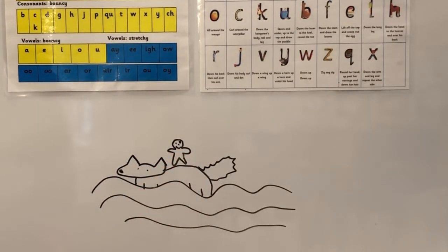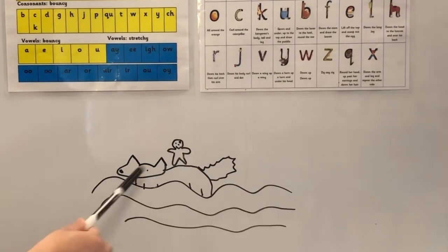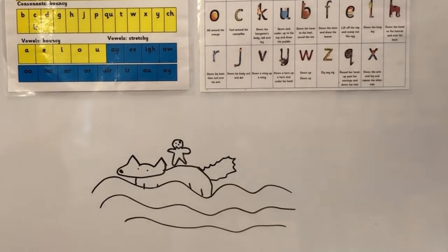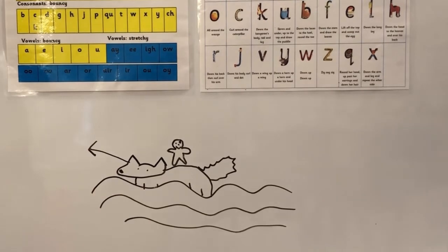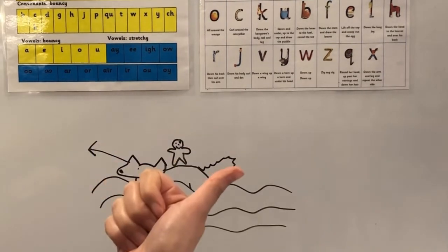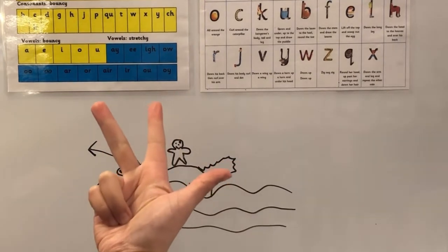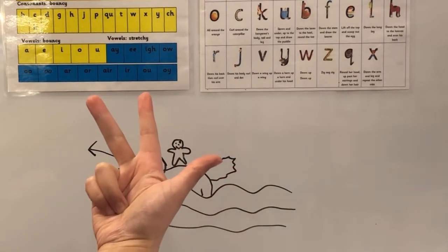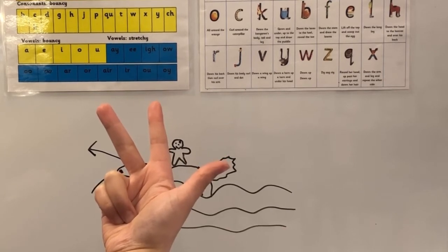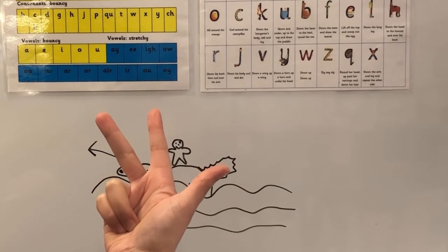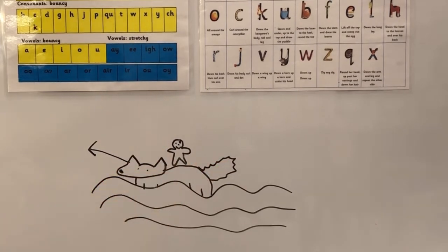We are now going to label the characters in our drawing. We've got a fox and a gingerbread man. I'm going to label the fox - I'm going to draw an arrow coming out of the fox. Now we're going to sound out 'fox'. Are you ready? F, O, X. How many sounds are there? Well done if you said there are three sounds. Our first sound is F - can you look for it on the sound chart?